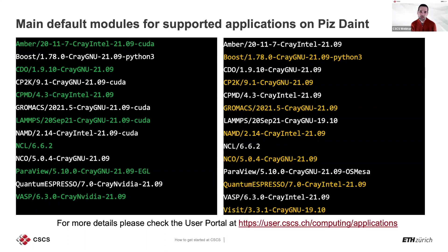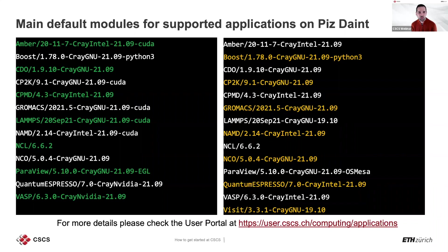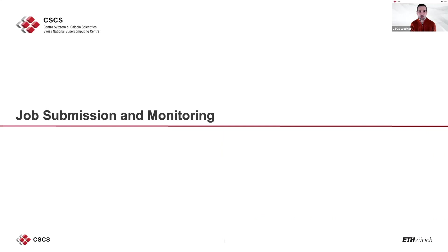We also provide some scientific applications pre-built on Piz Daint. Once you load either the daint-gpu or daint-mc module and type 'module available', you will see additional modules for applications in material science, biological science, and visualization, with their currently default versions. We have more recent versions like Quantum ESPRESSO 7.1 or LAMMPS September 2022 that are not yet default but can be loaded by directly specifying the version in the 'module load' command. More information is available on the user portal.